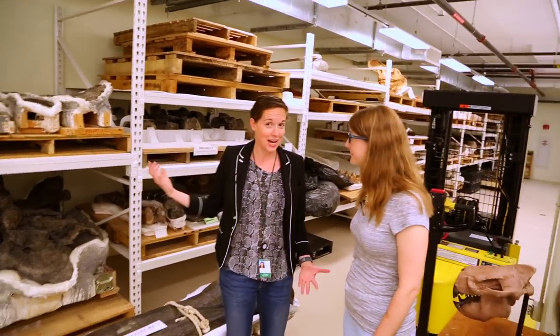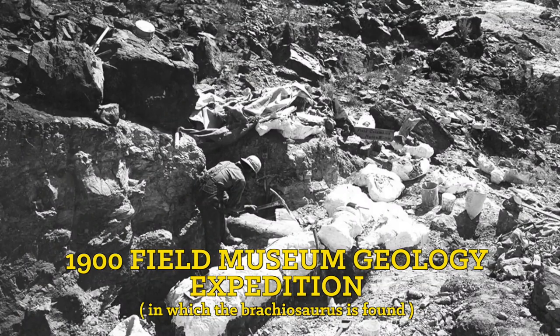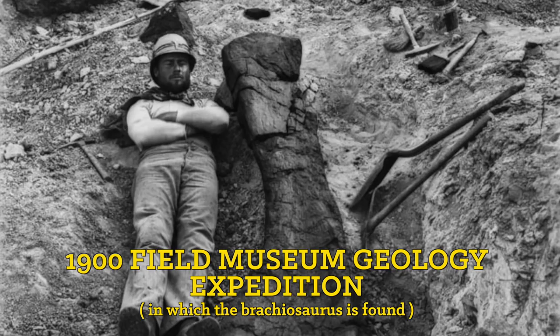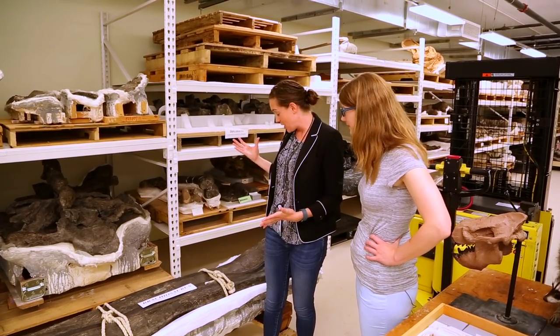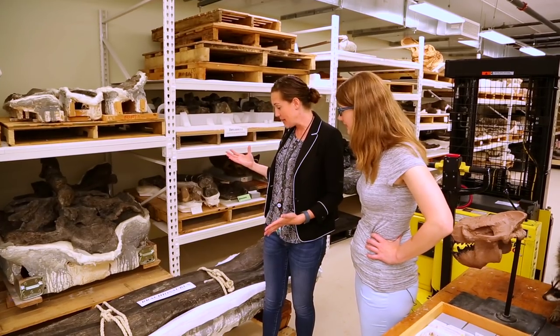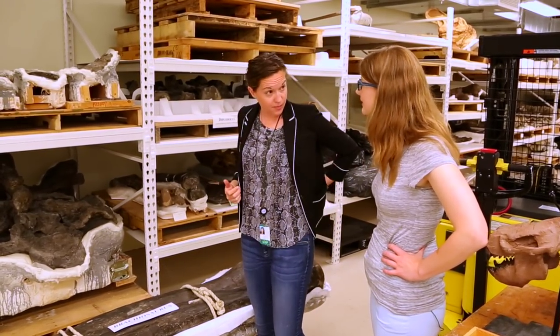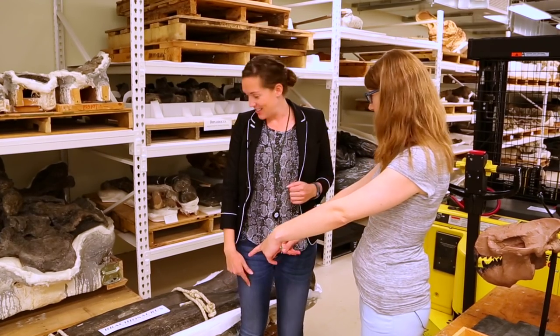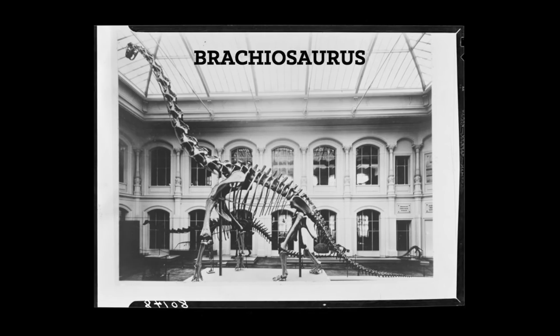We're standing in the holotype of Brachiosaurus. It was declared the largest dinosaur known when it was discovered on the 4th of July in 1900 by Elmer Riggs, a Field Museum scientist. So Brachiosaurus — what do we have of it? We have seven vertebrae, the sacrum, two caudals, four dorsal ribs, coracoid, humerus, ilium, and a femur. That's about 20% of a whole skeleton. And this is still the most complete Brachiosaurus specimen that we have.